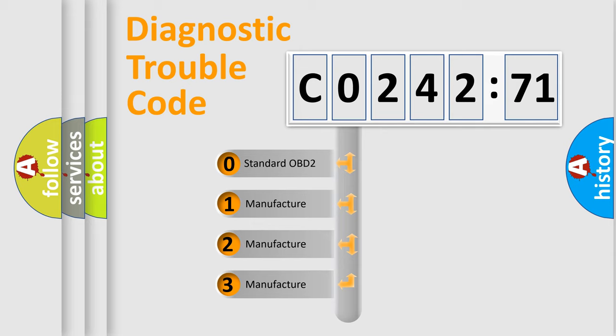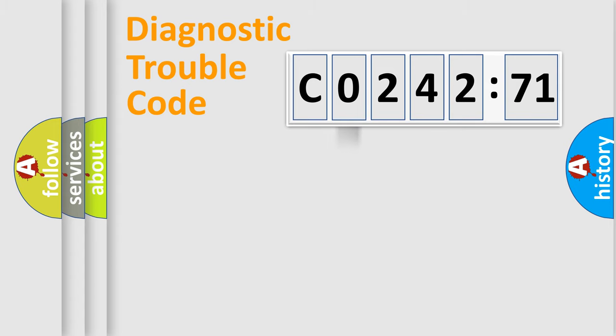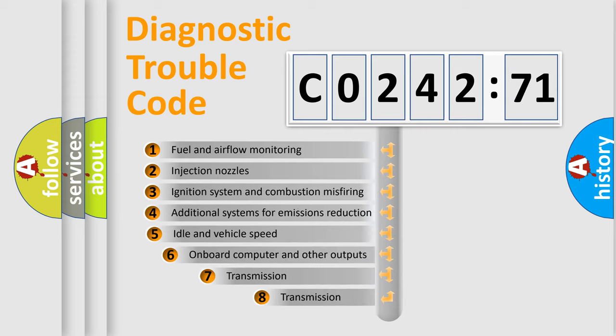If the second character is expressed as zero, it is a standardized error. In the case of numbers 1, 2, 3, it is a more prestigious expression of the car-specific error.